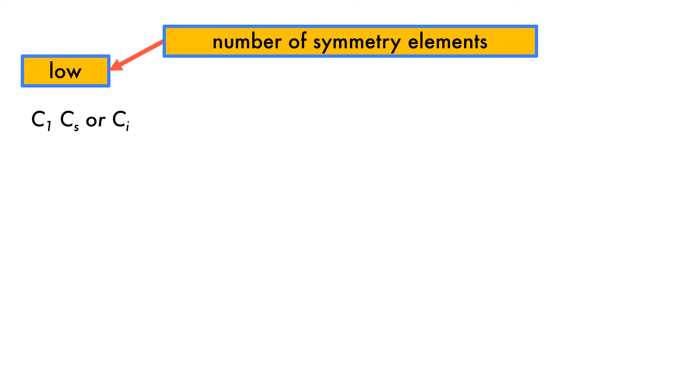Let's have a look at the first of those questions in more detail. When the number of symmetry elements is low, we have three possible point groups: C1, Cs, and Ci.